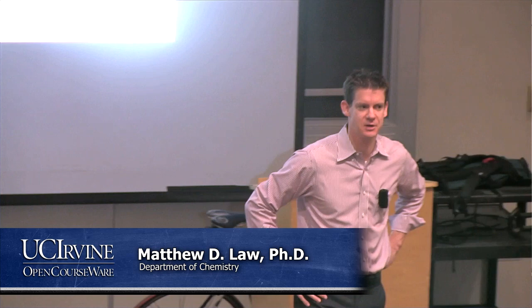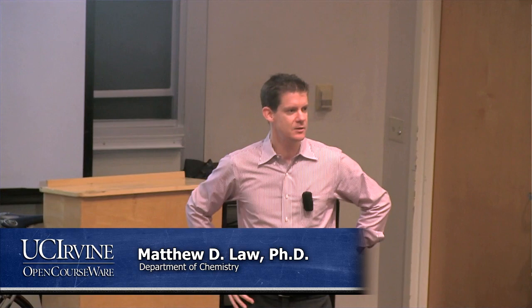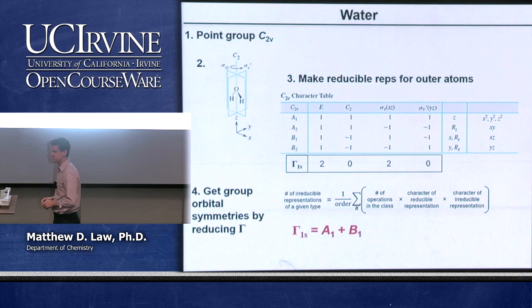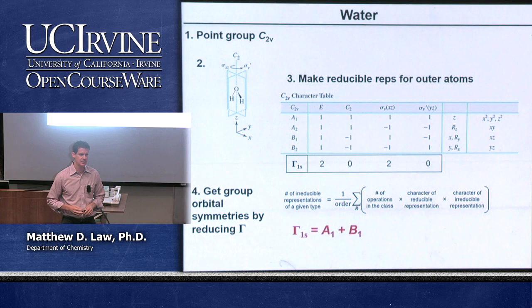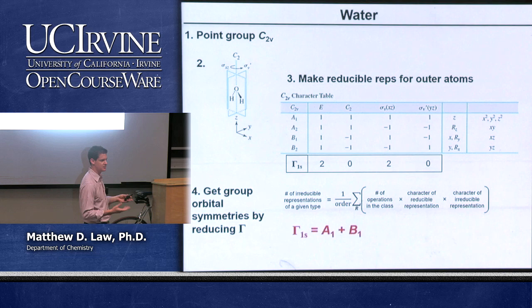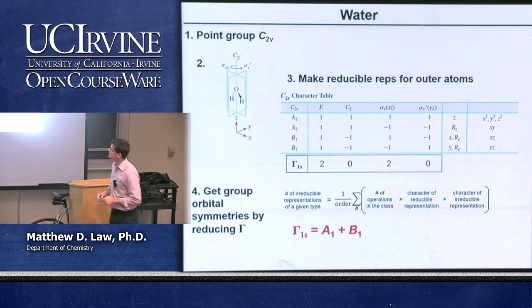Our objective today is to tackle the rest of the nonlinear molecules in Chapter 5. We're going to finish our example of water, then look at boron trifluoride, and a generic octahedral metal complex to show how sigma bonding can be described by MO theory. That rounds out Chapter 5, and our next task will be Chapter 7 — the application of MO theory to solid state compounds and crystals.